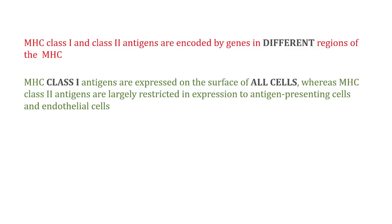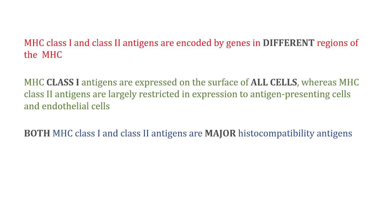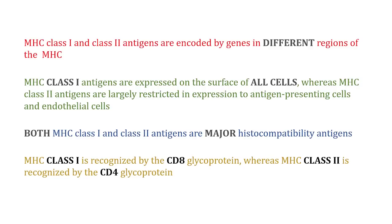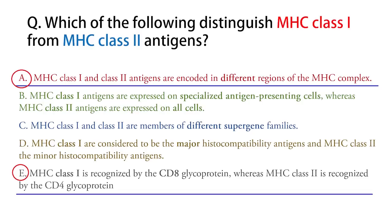MHC class one antigens are expressed on the surface of all cells, whereas MHC class two antigens are largely restricted in expression to antigen-presenting cells and endothelial cells. Both MHC class one and class two antigens are major histocompatibility antigens. MHC class one is recognized by the CD8 glycoprotein, whereas MHC class two is recognized by the CD4 glycoprotein.